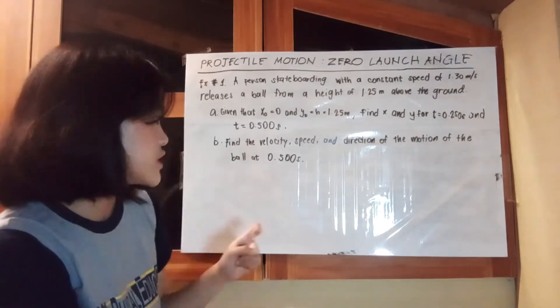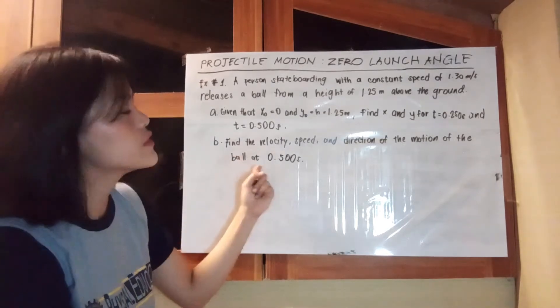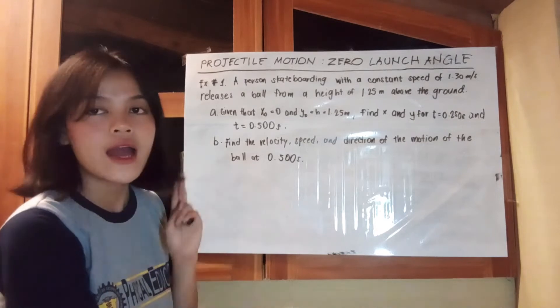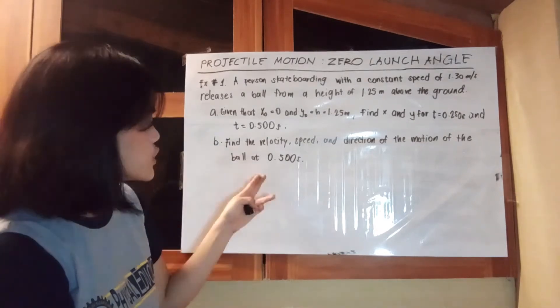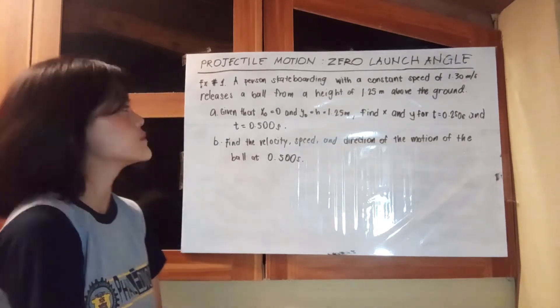For the second question, find the velocity, speed, and direction of the motion of the ball at 0.500 seconds.